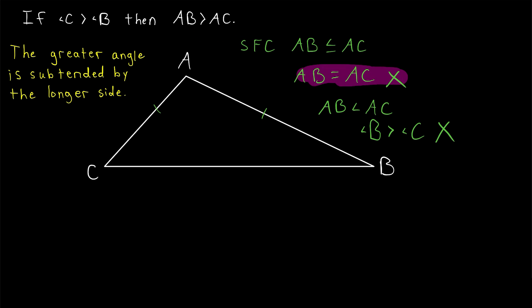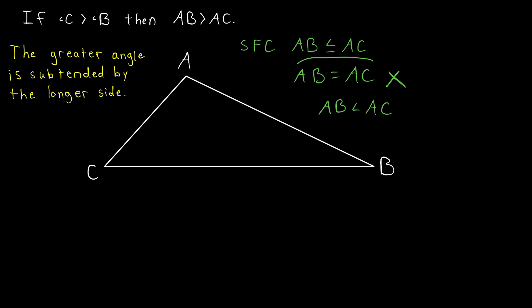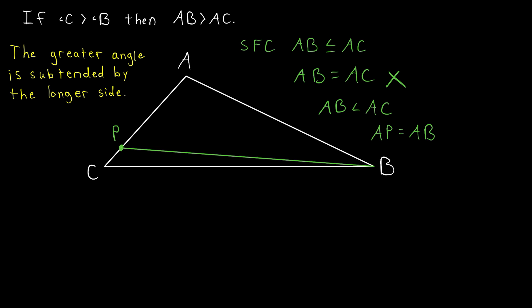For the first part of this contradiction argument we used the isosceles triangle theorem, and for the second part we used the converse of this statement. But if we wanted to, we could have just used the isosceles triangle theorem again. After proving that AB can't equal AC, we would assume AB is less than AC. Since AC is longer than AB, we can find a point on AC — which we'll call P — so that the length of segment AP equals the length of side AB. Then if we draw the segment from P to B, we have an isosceles triangle. Since AP equals AB, by the isosceles triangle theorem, angle APB is congruent to angle ABP.